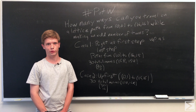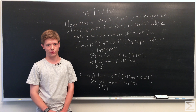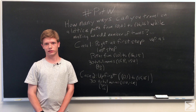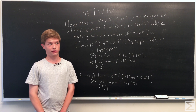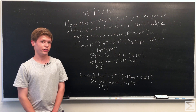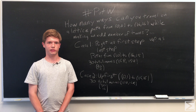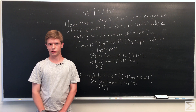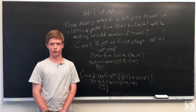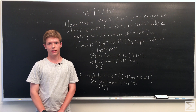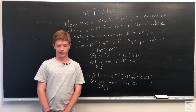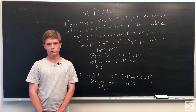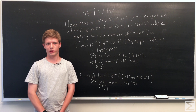So the total number of paths from (0,0) to (16,16) making an odd number of turns is 30 choose 15 plus 30 choose 15, which equals 2 times 30 choose 15. And that's the answer and solution for this week's Problem of the Week.